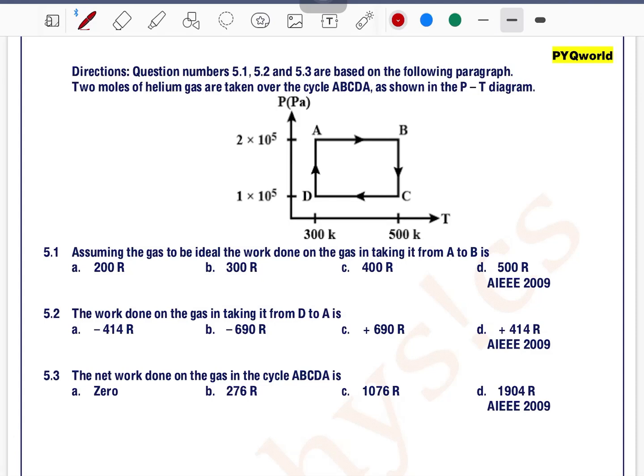Directions for questions 5.1, 5.2, and 5.3 are based on the following paragraph: Two moles of helium gas are taken over the cycle ABCDA as shown in the P-T diagram. It is given that n=2, and helium gas means it is a